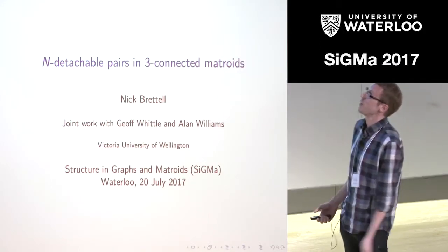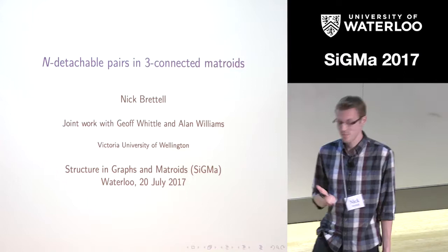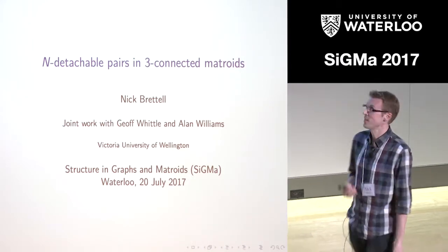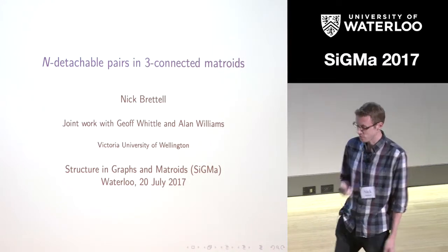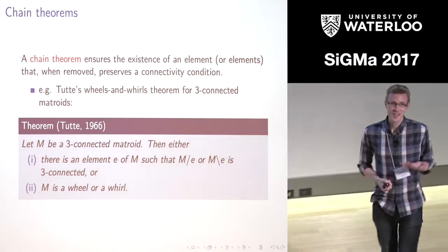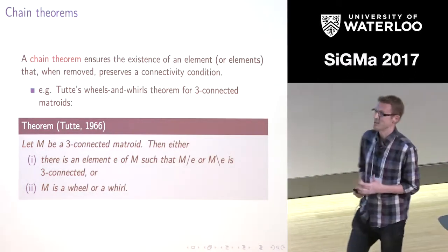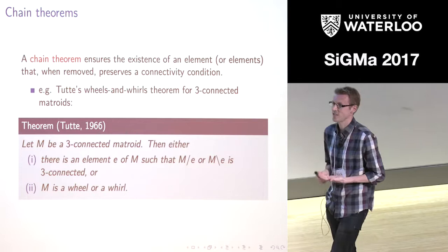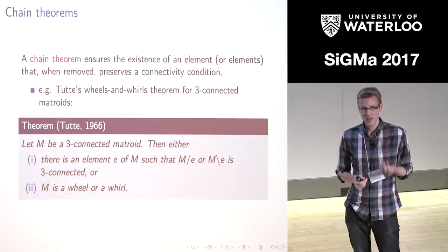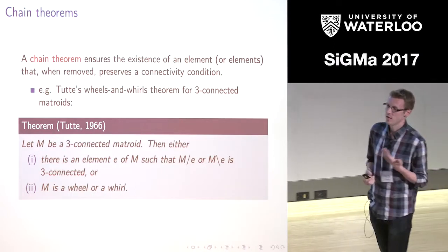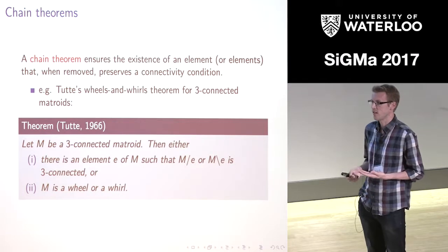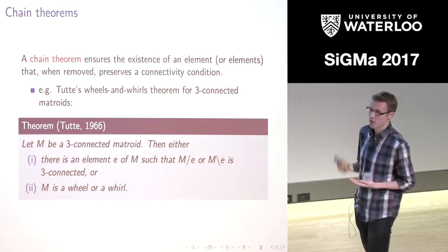I'm going to talk about joint work with Jeff Whittle and Alan Williams, and it's going to be about indetachable peers — we'll see what those are in a moment. The setting is always going to be in three-connected matroids. It's nice to start with a result of Tutt's — Tutt's wheels and whirls theorem. It tells us that if we have a three-connected matroid, then there exists some element that we can either delete or contract and remain three-connected, unless we are a wheel or a whirl.